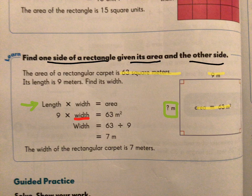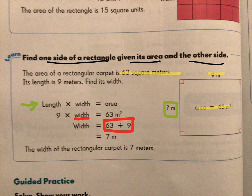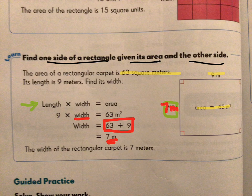If you don't want to do multiplication, remember the inverse operation will give us the same answer. So we could say 63 divided by 9, that's the same thing as 9 times what would give me 63. And we can see that that would be 7. So the missing side length would be 7 meters.